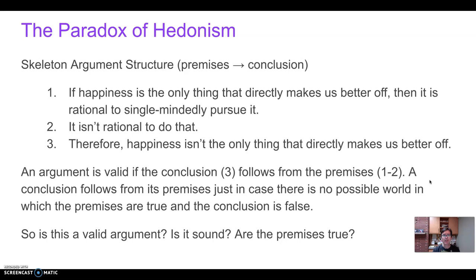Here's what I mean by a skeleton argument. An argument is a structured set of premises and a conclusion — at least one conclusion and at least one premise. The arrow represents that the premises lead to or support the conclusion; the conclusion follows from the premises. In this case we have the argument broken down into three parts: two premises followed by a conclusion.